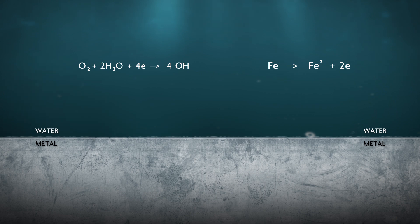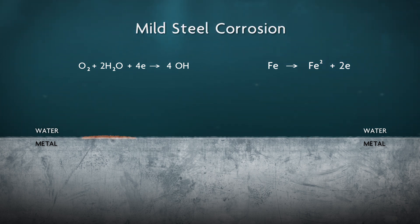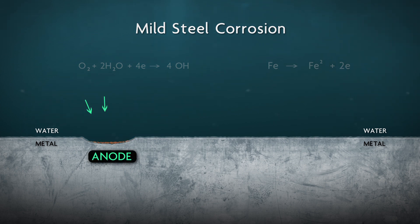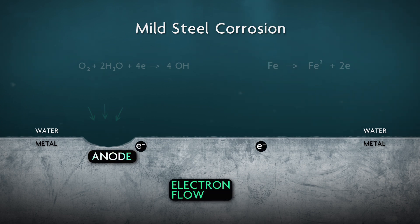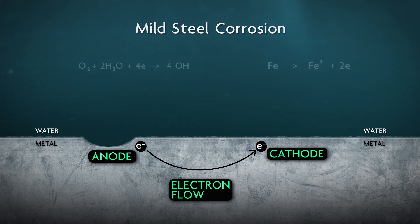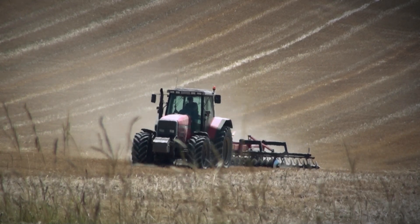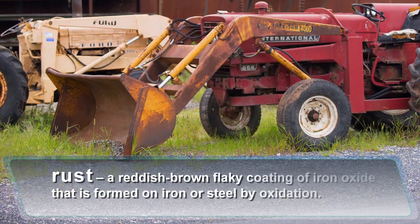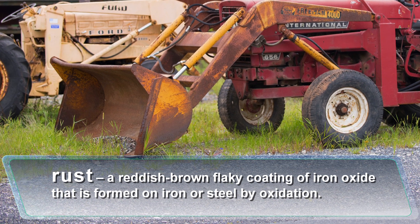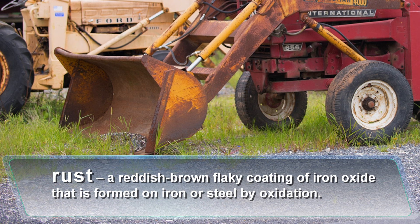To appreciate the benefits of galvanizing, let's begin with a review of mild steel corrosion. Don't let the formulas distract you. The three important things to remember are: one, metal loss occurs at the anode; two, electrons flow from the anode to the cathode; and three, hydroxide creates a localized high pH at the cathode, which initiates a small amount of precipitation. With mild steel, the metal loss occurs at a localized anode surrounded by a much larger cathode area. Just visit any old farm and you're bound to see a rusty tractor somewhere. Rust is a form of corrosion that occurs when iron or an iron alloy like steel is exposed to oxygen and moisture.